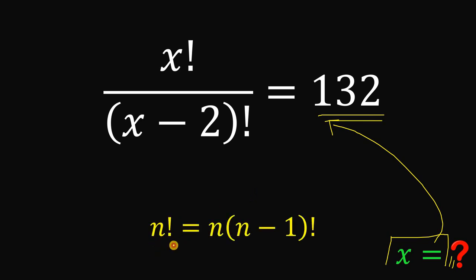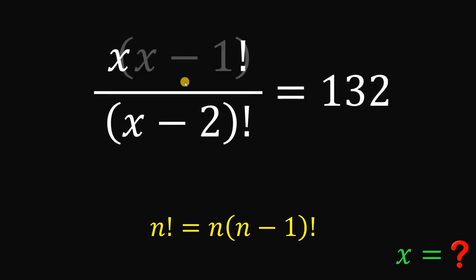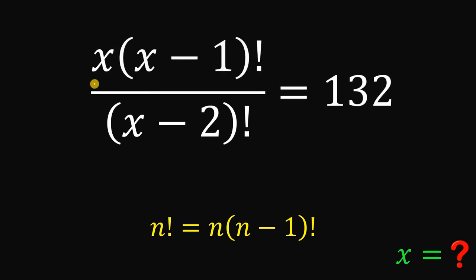Take note: when we have n factorial, this can be written as n multiplied by (n minus 1) factorial. So x factorial can be written as x multiplied by (x minus 1) factorial, using this identity.